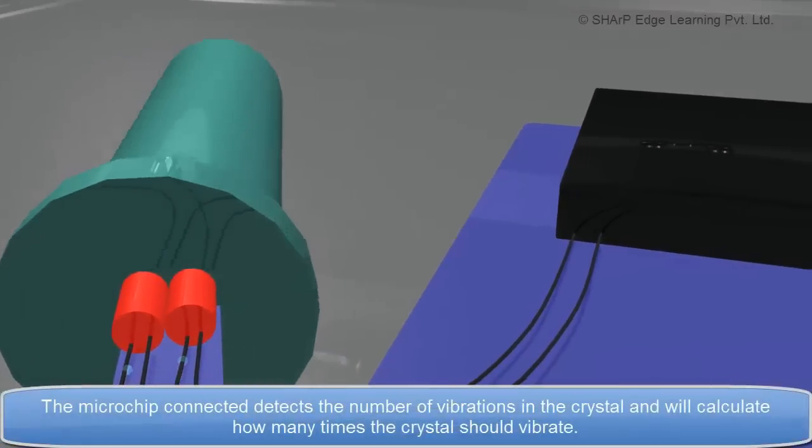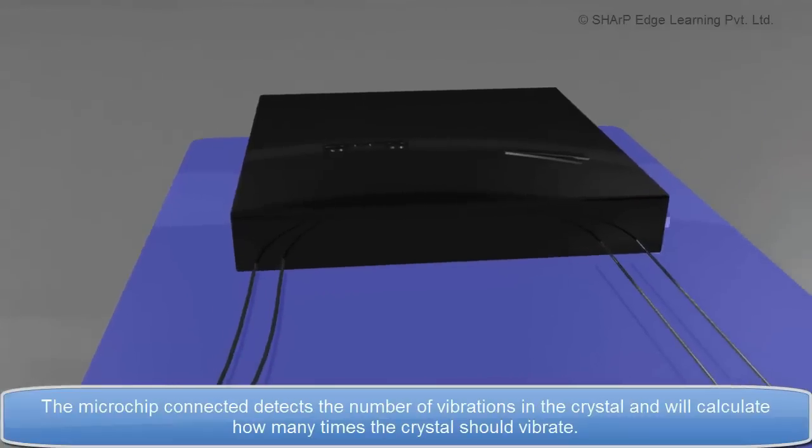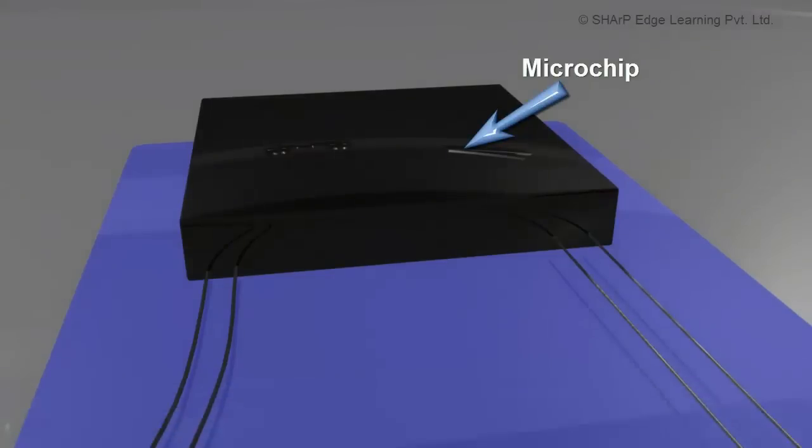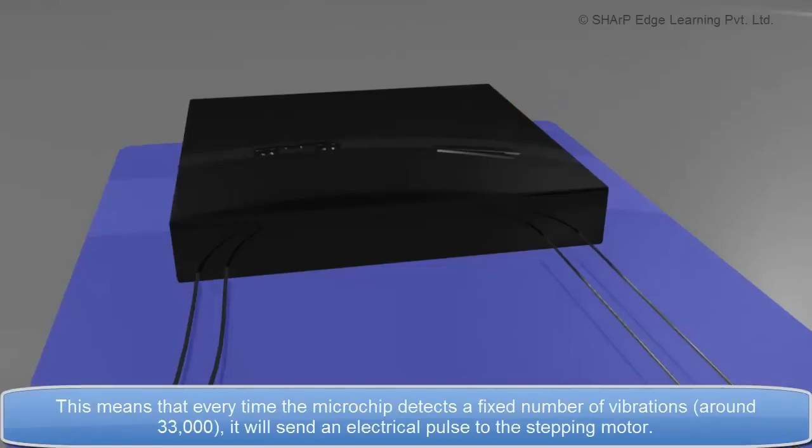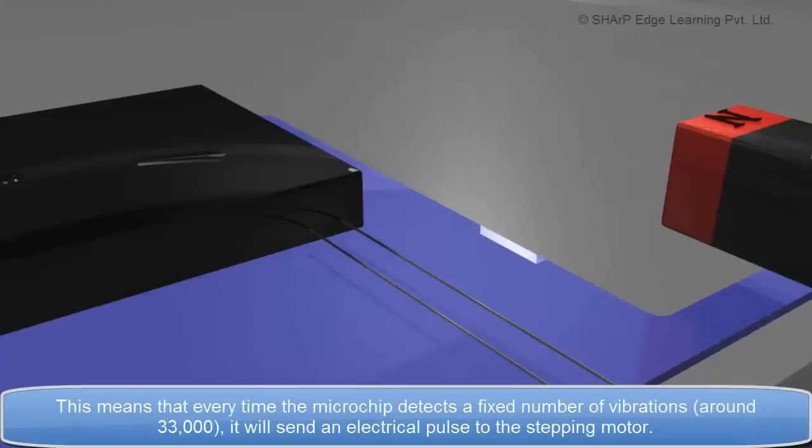The microchip connected detects the number of vibrations in the crystal and will calculate how many times the crystal should vibrate. This means that every time the microchip detects a fixed number of vibrations, around 33,000, it will send an electrical pulse to the stepping motor.